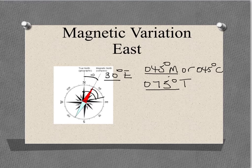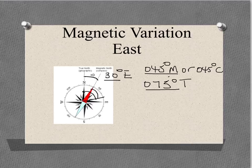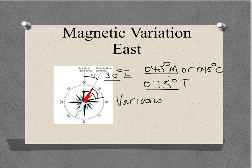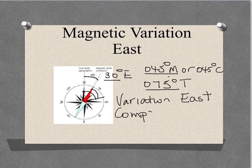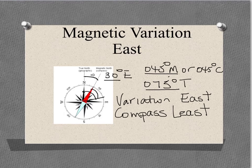What's important to note here is that when our variation is to the east, our compass bearing is always less than our true bearing. We have a little rhyme to help us remember this: variation east, compass least — meaning that if we are in a region where the magnetic variation is to the east, then our compass bearing will always be less than our true bearing.